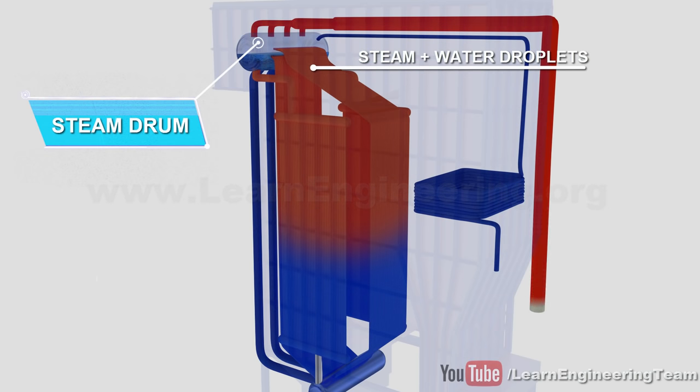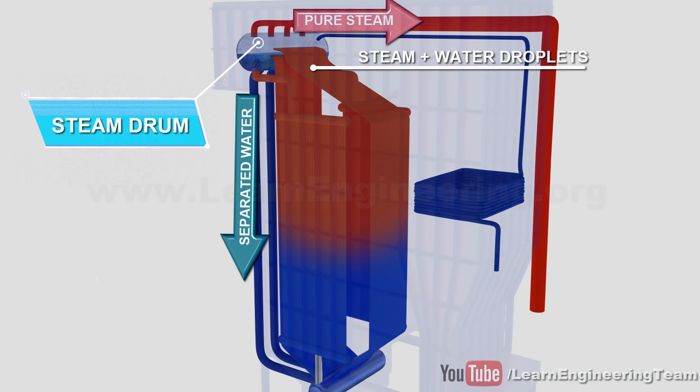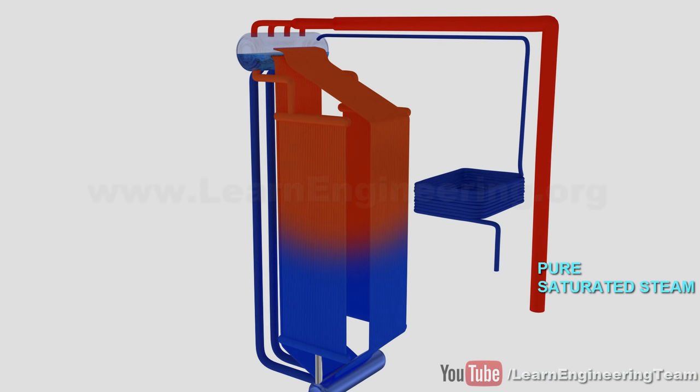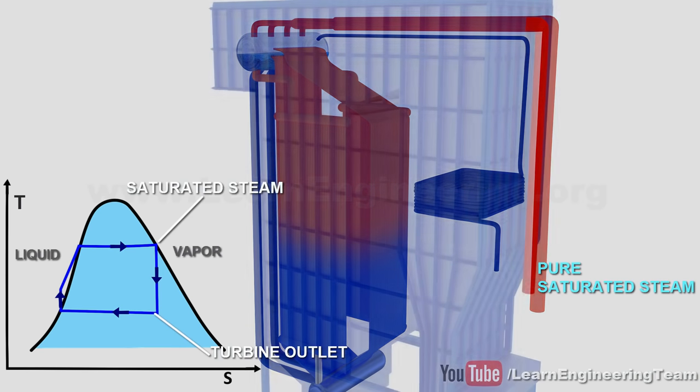The real function of the steam drum is to separate the water droplets from the steam. As a result, the steam leaving the steam drum is saturated and pure.